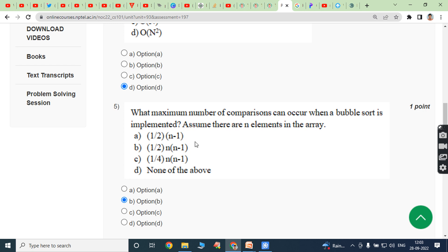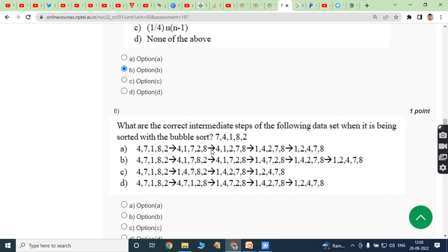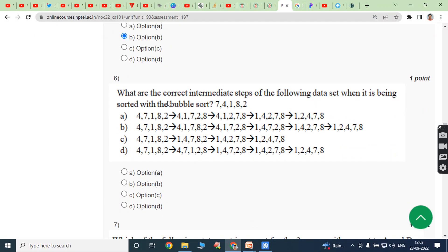Next, sixth one: What are the correct intermediate steps of the following data set when it is being sorted with bubble sort 7, 4, 1, 8, 2? Here we are using bubble sort logic. After applying the bubble sort logic, so we are getting the answer is B, option B.